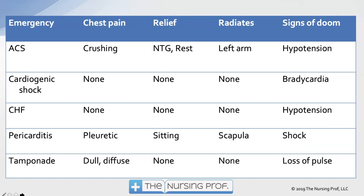Comparing pericarditis with other cardiac problems that cause chest pain: in acute coronary syndrome, we have crushing chest pain relieved by nitroglycerin and rest, radiating to the left arm, with hypotension as the sign of doom. In cardiogenic shock, there may be no pain and bradycardia is the sign of doom. Heart failure's sign of doom is hypotension. In pericarditis, we have pleuritic chest pain — sharp, localized, worse on inspiration — with relief from sitting up. Radiating back to the scapula, the sign of doom is shock indicating tamponade.